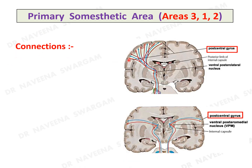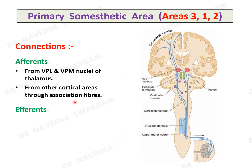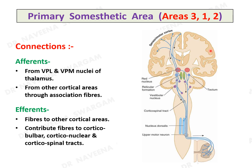Connections of the primary somesthetic area: it receives major afferents from the ventroposterolateral and ventroposteriomedial nuclei of the thalamus, and also from other cortical areas of the same hemisphere through association fibers. Efferents are given to other cortical areas and also contribute to corticobulbar, corticonuclear, and corticospinal tracts, which is why the primary somesthetic area is also known as the sensorimotor cortex.